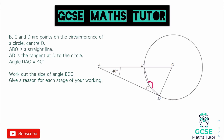We already know a tangent meets a radius, so straight away we put in 90 degrees — and since the question says to give a reason for each stage, we state that a tangent meets a radius at 90 degrees. We've got a big triangle: the bottom angle is 90, and we know the 40 degree angle, so 90 plus 40 is 130, and 180 minus 130 gives 50 degrees at the central point.